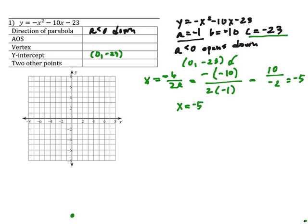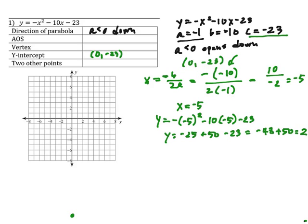Now how do we find the y? We substitute it into our equation. Y equals negative negative 5 squared minus 10 times negative 5 minus 23. So y equals negative 25 plus 50 minus 23. That is negative 48 plus 50, so that equals 2. So negative 5, 2.